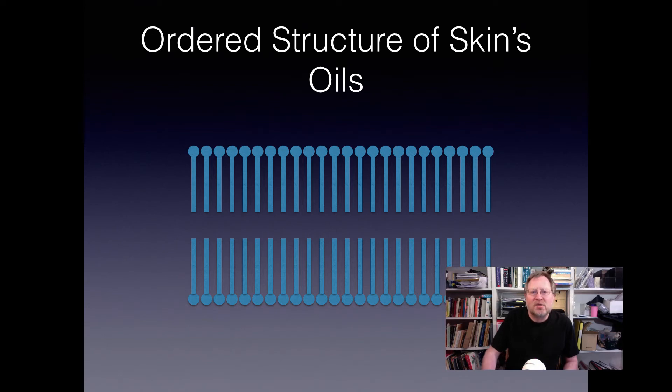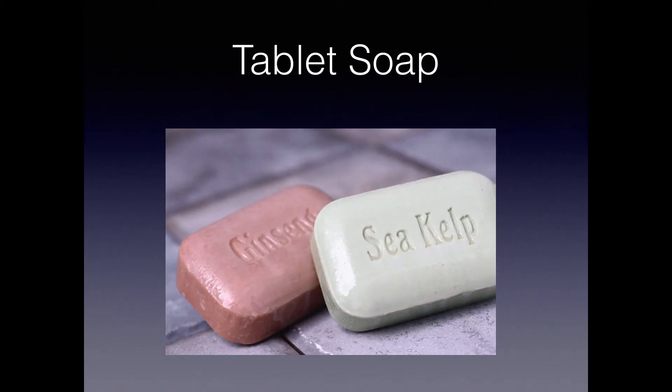Detergents can penetrate into the skin and temporarily disrupt this ordered structure. Again the effect is to let water get out from the skin more quickly than usual, leaving your skin dry. Getting back to soap, it happens to be a pretty good compromise between cleaning the skin and damaging it. It does take off some of the oils from the surface of the skin, but it doesn't really do very much to the oils inside the top layer of the skin.